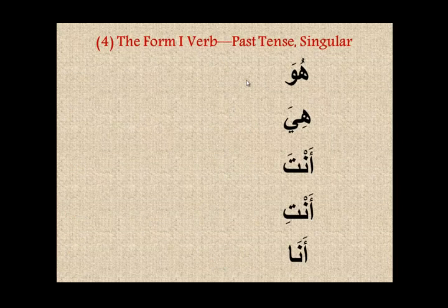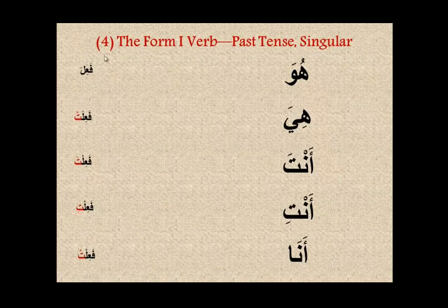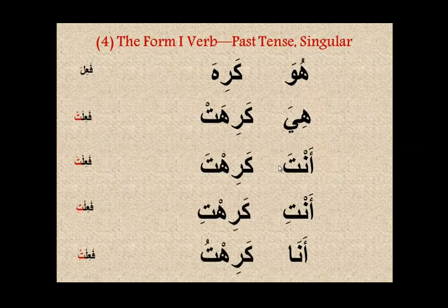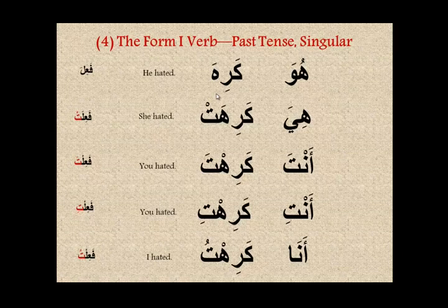The last variation is fa'ila — the middle root takes a kasrah. The verb is kariha, meaning 'to hate' or 'to detest.' Conjugation: huwa kariha (he hated), hiya karihat (she hated — taa saakinah), anta karihta (you hated, masculine), anti karihti (you hated, feminine), and ana karihtu (I hated). This verb usually takes a direct object, but that is not our concern here.